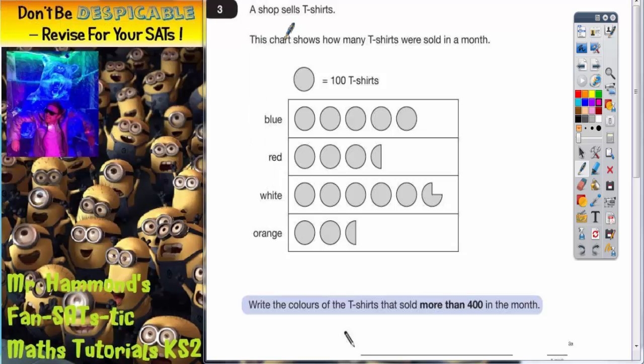Question number three. A shop sells t-shirts. This chart shows how many t-shirts were sold in a month.